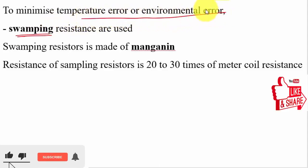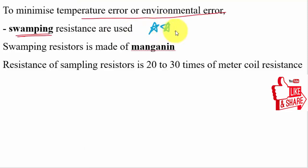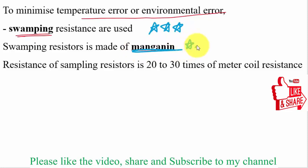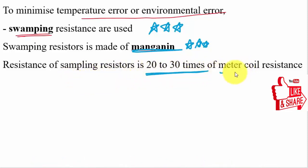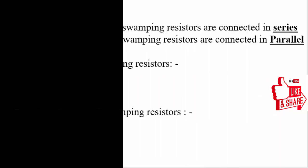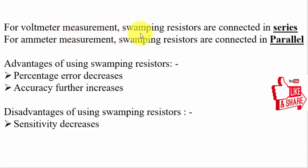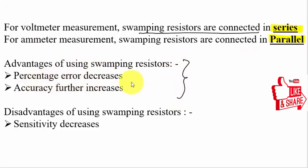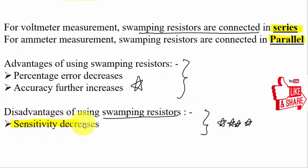To minimize temperature or environmental error, we use swamping resistance, which is made up of manganin. The resistance of swamping resistors is 20 to 30 times more than the meter coil resistance. For voltmeter measurement, swamping resistors are connected in series; for ammeter measurement, swamping resistors are connected in parallel. The advantage of swamping resistors is that percentage error decreases and accuracy increases. The main drawback is that while the range increases, sensitivity decreases.